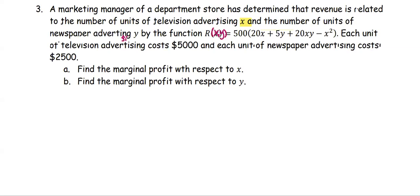In part A and part B, we are going to find the marginal profit with reference to x and with reference to y respectively. The problem gives r(x,y) and cost information and asks us to find the marginal profit represented by P. That means in part A we find the partial derivative of P with respect to x, and in part B we find the partial derivative of P with respect to y.